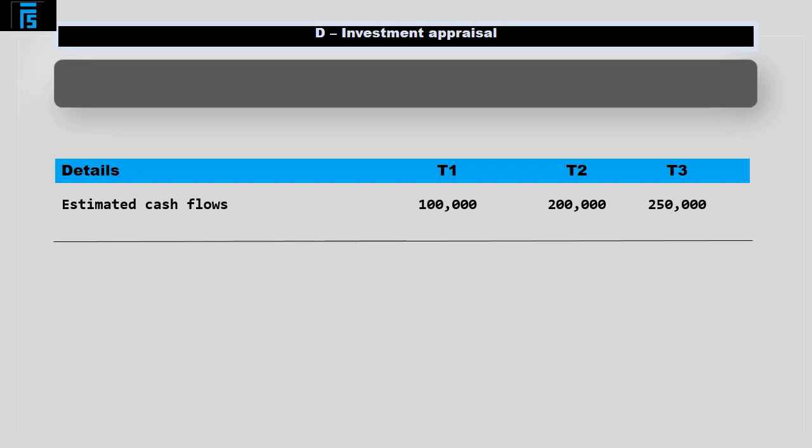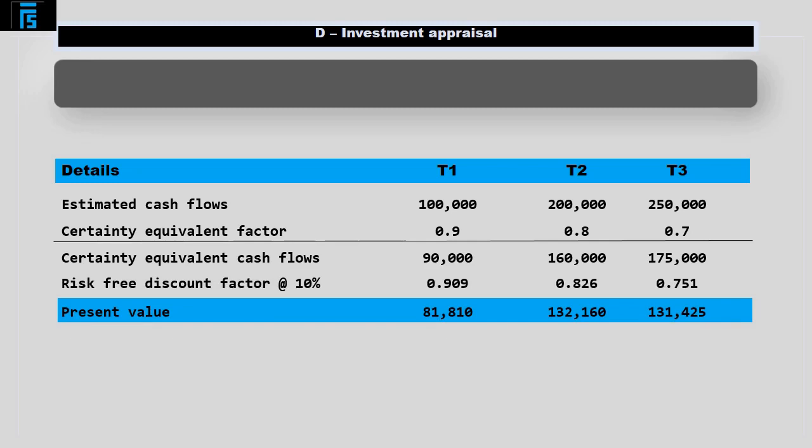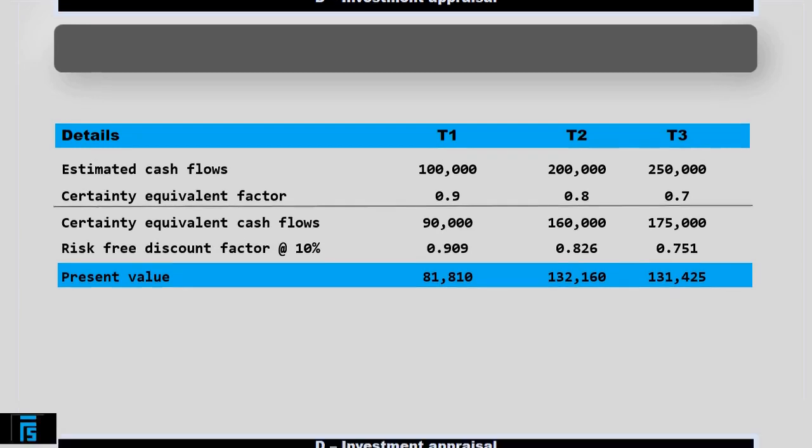Start off by writing out the estimated cash flows. Multiply the estimated cash flows by the certainty equivalent factors. This strips out the risk from the cash flows and turns them into risk-free certainty equivalents. The certainty equivalents should then be discounted at the risk-free rate. There is no risk anymore in the cash flows so we don't need a risk premium in the discount rate.